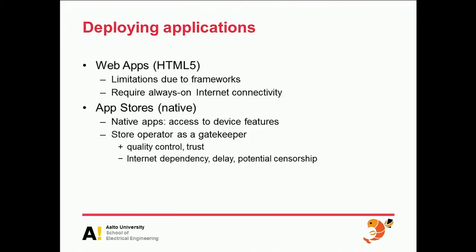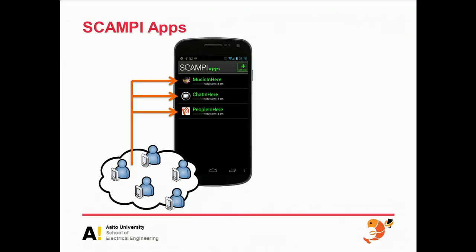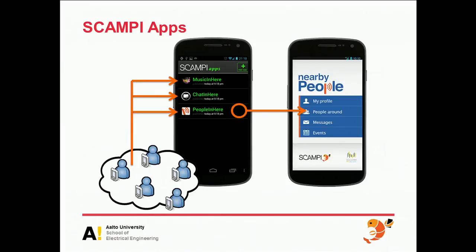What we are doing is essentially taking a step back and saying an application is nothing more than a bag of bits. Rather than putting this bag of bits somewhere on the other side of the planet for somebody to download, it would be equally useful to have it assigned as a DTN bundle that you can then install. We have a little Scampi apps mechanism — Scampi, by the way, is the European project that funded this — where people can publish their own applications into the DTN network that can be autonomous in the community, from which others can then download those applications, install them, and utilize the same network of devices to run them.